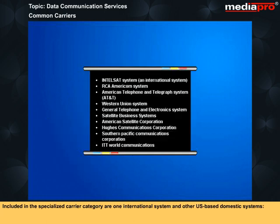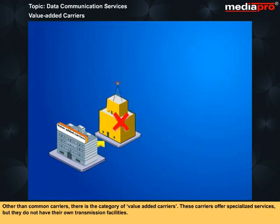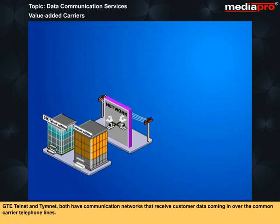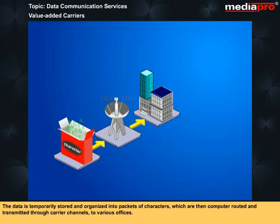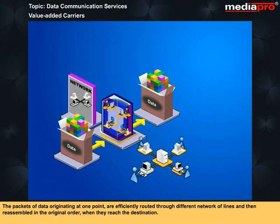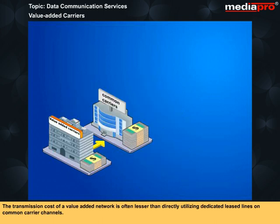Included in the specialized carrier category are one international system and other US-based domestic systems. Other than common carriers, there is the category of value-added carriers. These carriers offer specialized services but do not have their own transmission facilities. GTE Telnet and Timnet both have communication networks that receive customer data coming in over common carrier telephone lines. The data is temporarily stored and organized into packets of characters, which are then computer-routed and transmitted through carrier channels to various offices. This method of transmission is called packet switching.